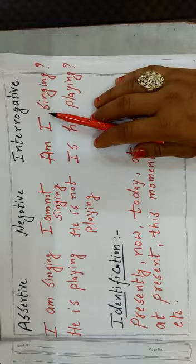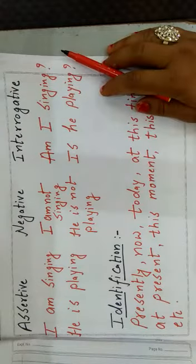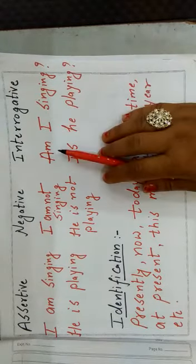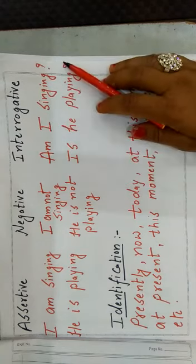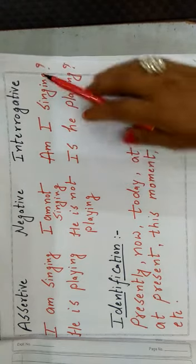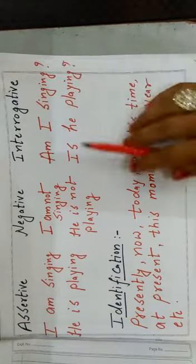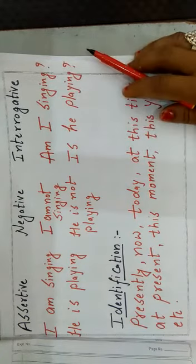To make interrogative form or the question form, we write the be form of the verb in the beginning of the sentence then subject plus verb plus ing. That is, am I singing question mark, is he playing along with the question mark.